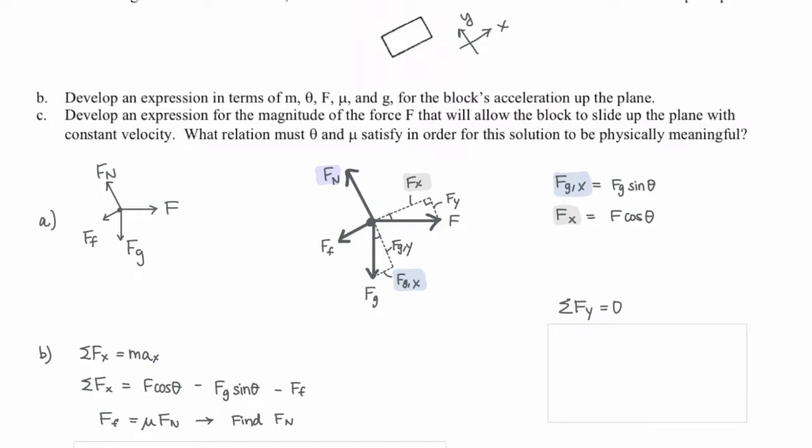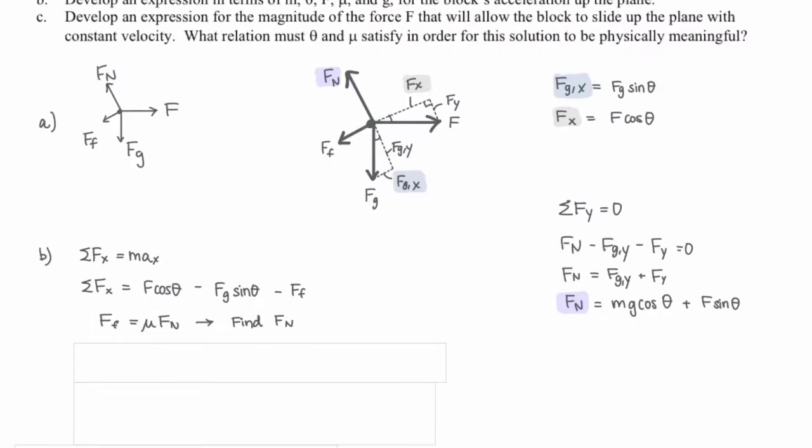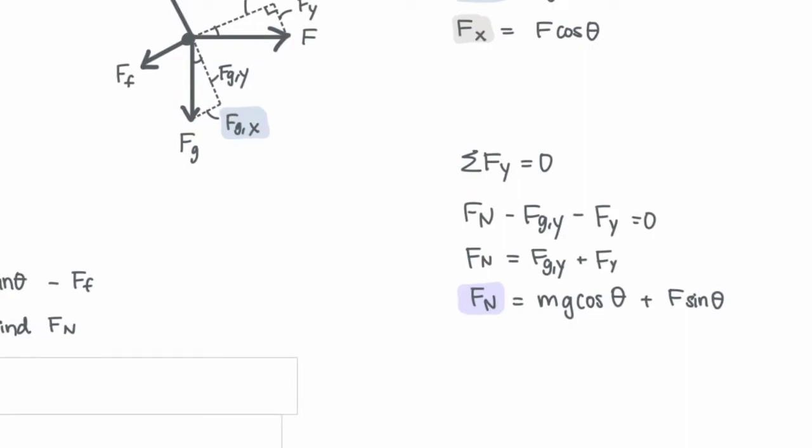We've got three forces in the y-direction. Let's say that the only positive one is the normal force. Fy applied and Fgy are both going to be negative. And if we're solving for Fn, we just need to add those other two to the other side.